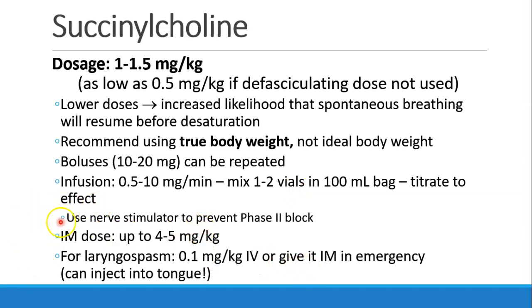Succinylcholine can be given intramuscularly in an emergency at 4 to 5 mg per kg. It can be used to treat laryngospasm — give it IV at just 0.1 mg per kg. If you have no IV, you can give it intramuscularly in an emergency, and some have suggested injecting it straight into the tongue to get the most rapid absorption.